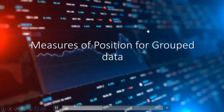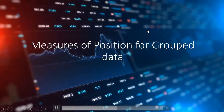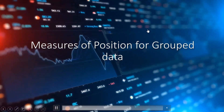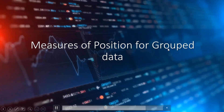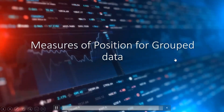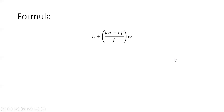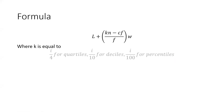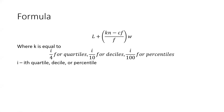In this video, we're going to talk about measures of position for grouped data. The formula is given by this, where k is equal to i over 4 for quartiles, i over 10 for deciles, and i over 100 for percentiles.